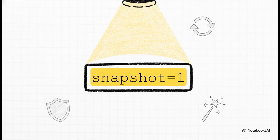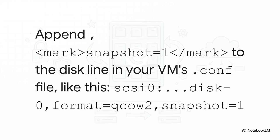That's the little piece of text you need to add to your VM's configuration file. So how do you do it? You just SSH into your Proxmox host, find the .conf file for your VM. It's usually in /etc/pve/qemu-server/, and on the line that defines the virtual disk, you just append comma snapshot equals one right at the end, just like you see here. Save the file, and you're done.